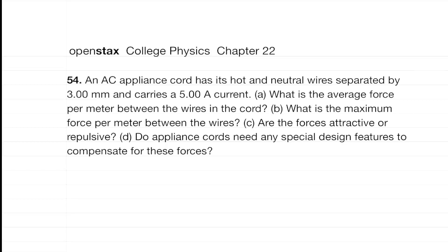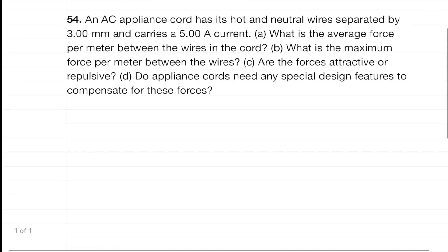Welcome. In this video we are going to look at problem 54 from chapter 22 of College Physics by OpenStax. In this problem we have an appliance cord with a hot wire and a neutral wire. They are separated by three millimeters and each carries a five amp current. We need to find the average force per meter, the maximum force per meter, whether the forces are attractive or repulsive, and if the cord needs any special design features.